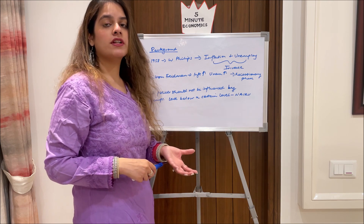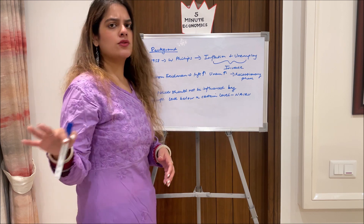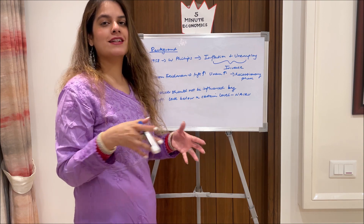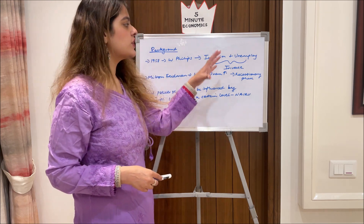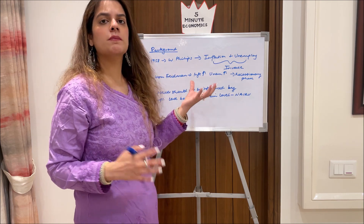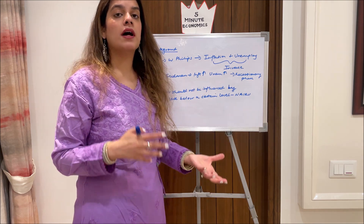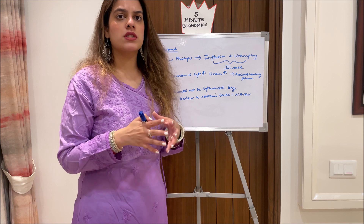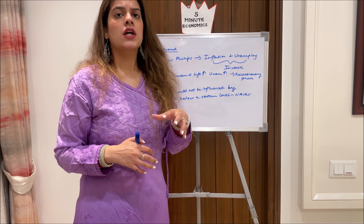Moving to the background of how NAIRU came into existence — back in 1958, W. Phillips, a famous economist, introduced his famous Phillips Curve. The Phillips Curve told us that inflation and unemployment hold an inverse relationship: when inflation is rising, people are getting jobs and unemployment is falling, and vice versa.